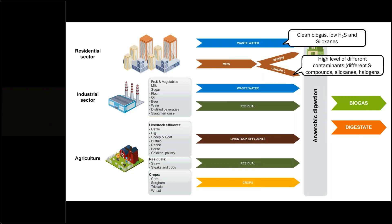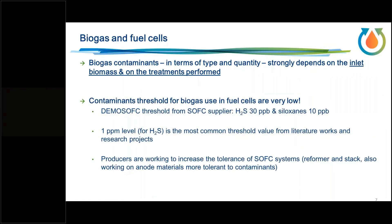Other biogas typologies include landfill gas, where contaminant levels are much higher — very high levels of different sulfur compounds such as mercaptans and thiols, siloxane, and halogens. Biogas from agriculture has significantly higher H2S compared to wastewater. These differences affect the type and scale of the required cleanup process. In our case with wastewater biogas, the levels are low enough that we concentrated on adsorption processes without scrubbing as a pre-step.